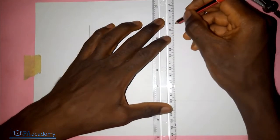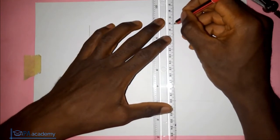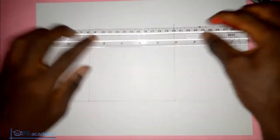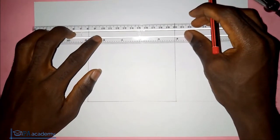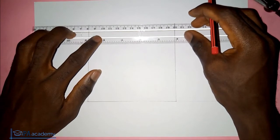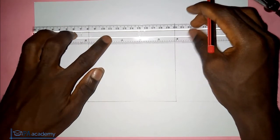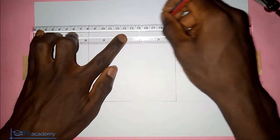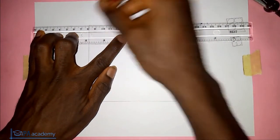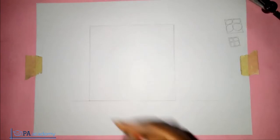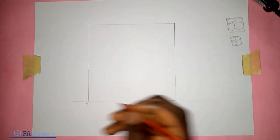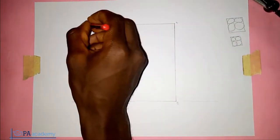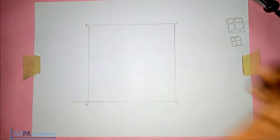I'm using my protractor to get the right angles. So now this is our square. Let's label this point A, B, C, and point D.